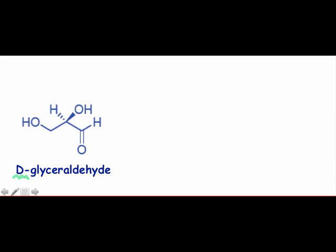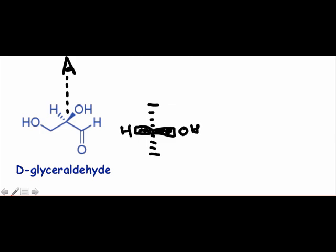To generate a Fischer projection of D-glyceraldehyde, we must imagine looking down on the molecule from above, so that the four bonds from the stereocenter form a sort of cross when projected toward our eye. In three dimensions, we would see the hydroxyl group and hydrogen atom coming toward us.